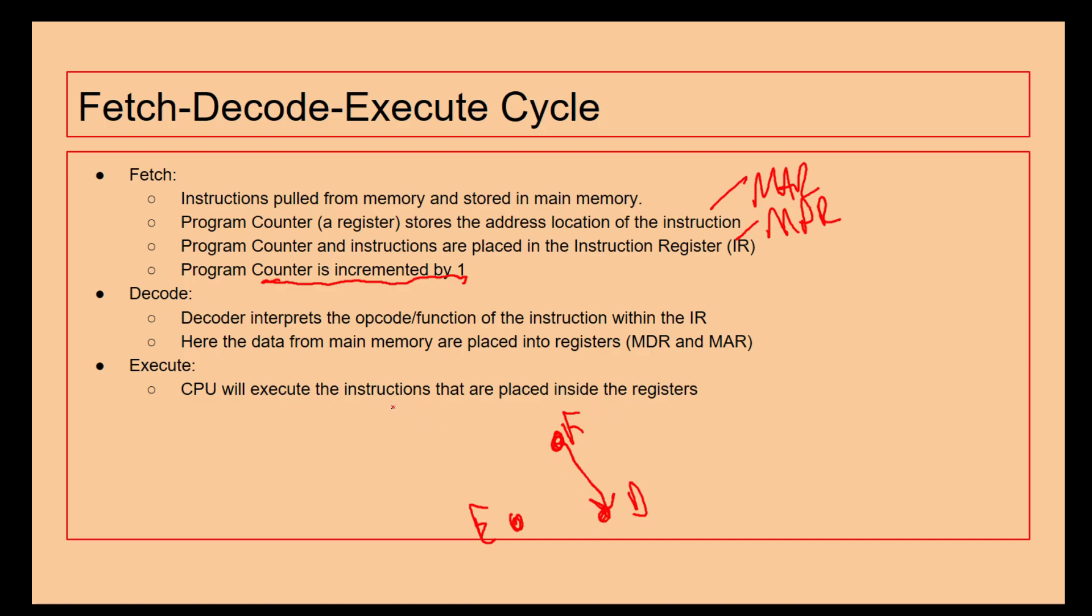When we're decoding, it interprets the opcode or op-functions from the MAR and MDR and the data for the main memory is then put into those particular places. And then finally the execute stage, the CPU executes the instructions that are inside the MDR and the MAR. At this stage, the MAR, the memory address register, is already looking at the fetch cycle to find the next piece of information.